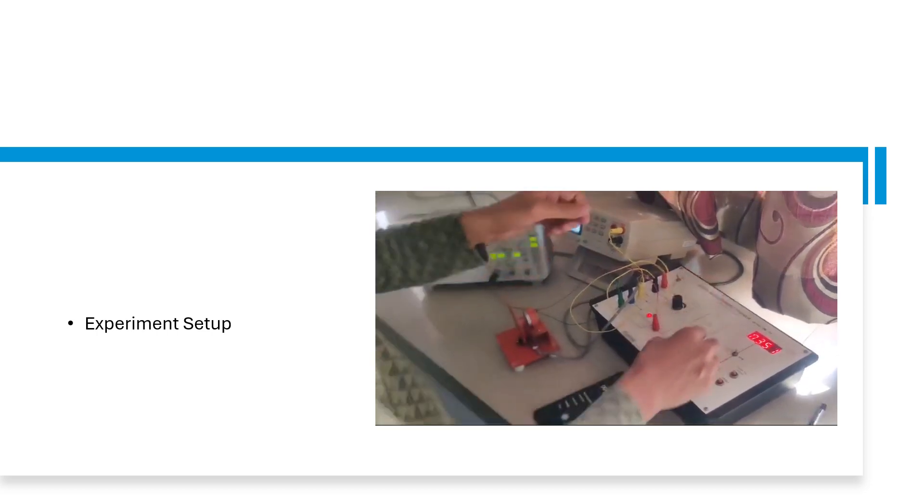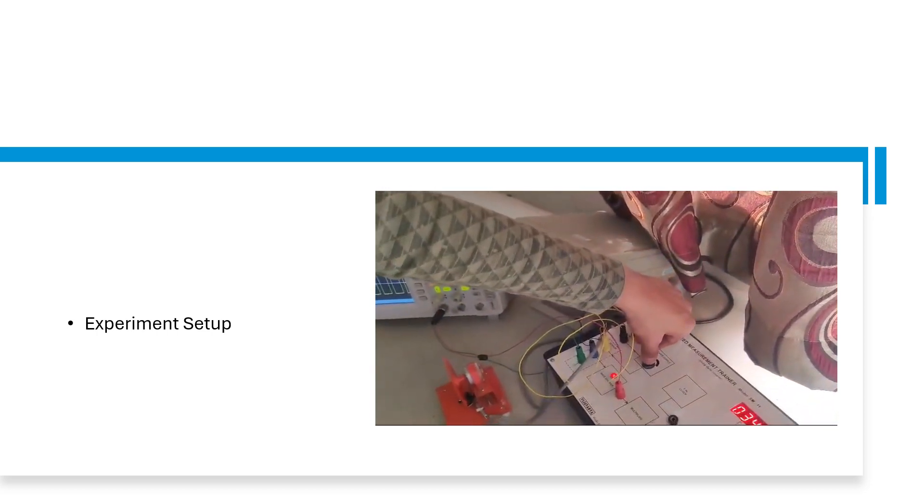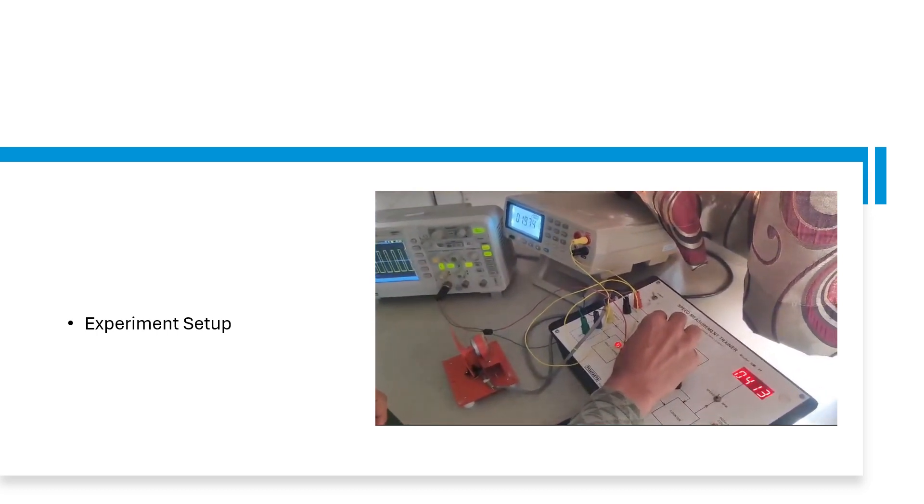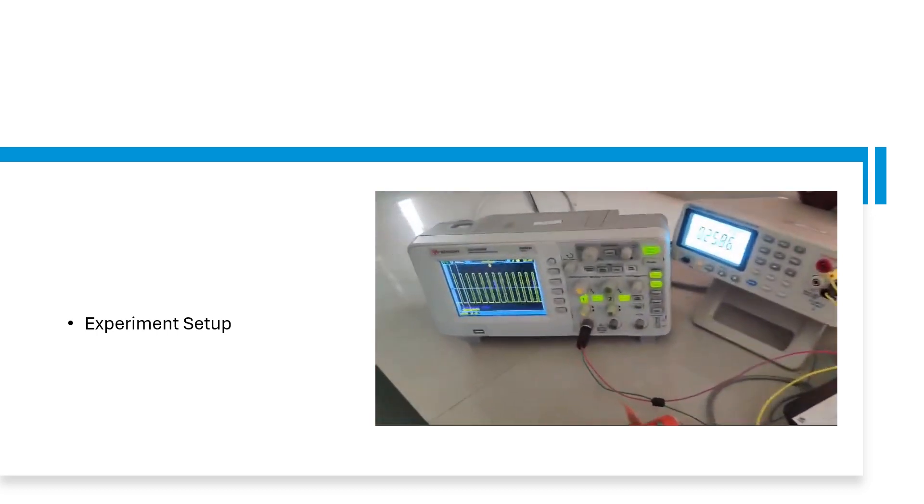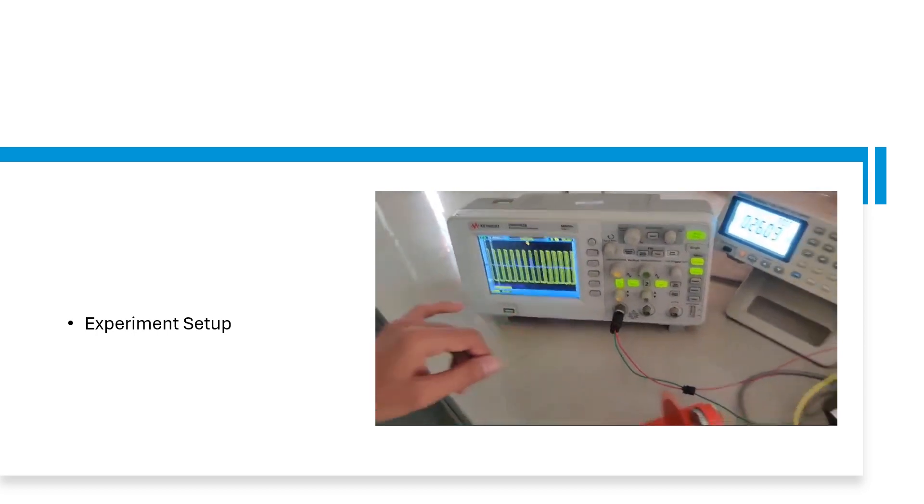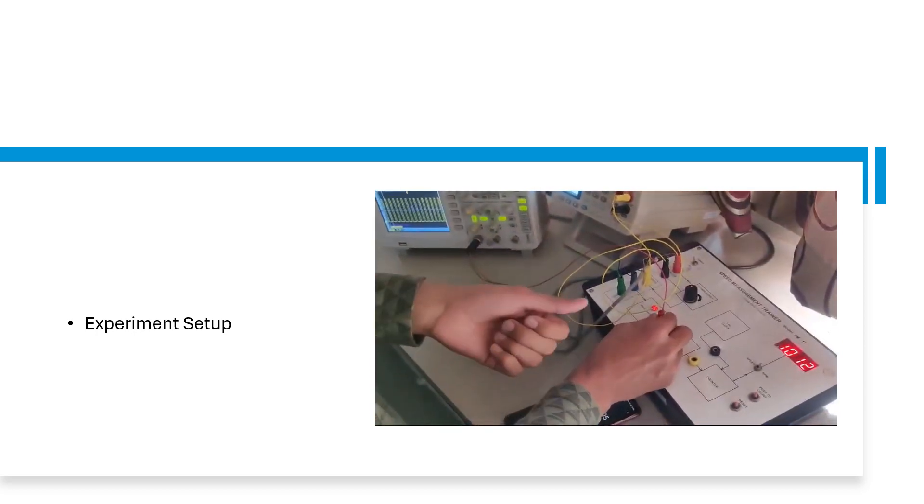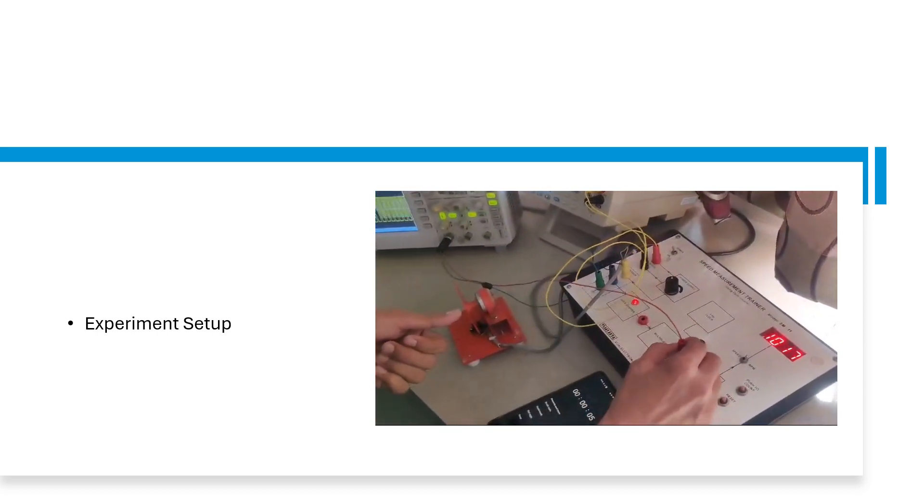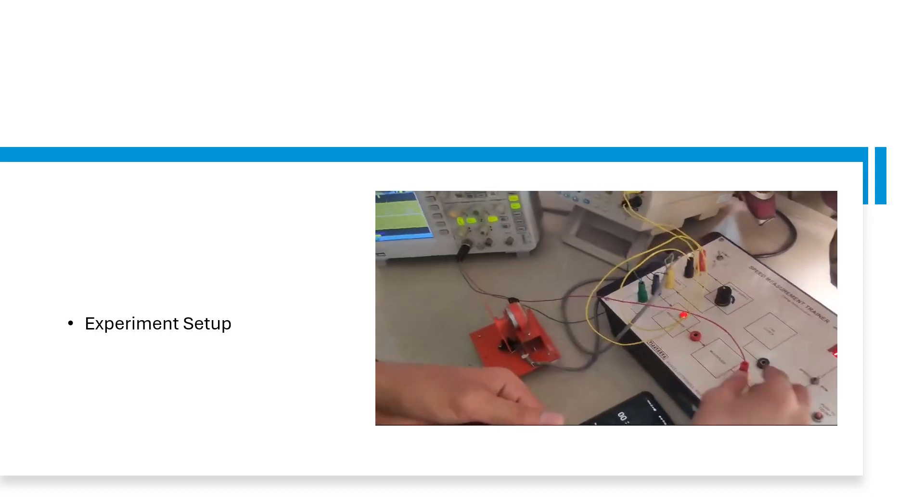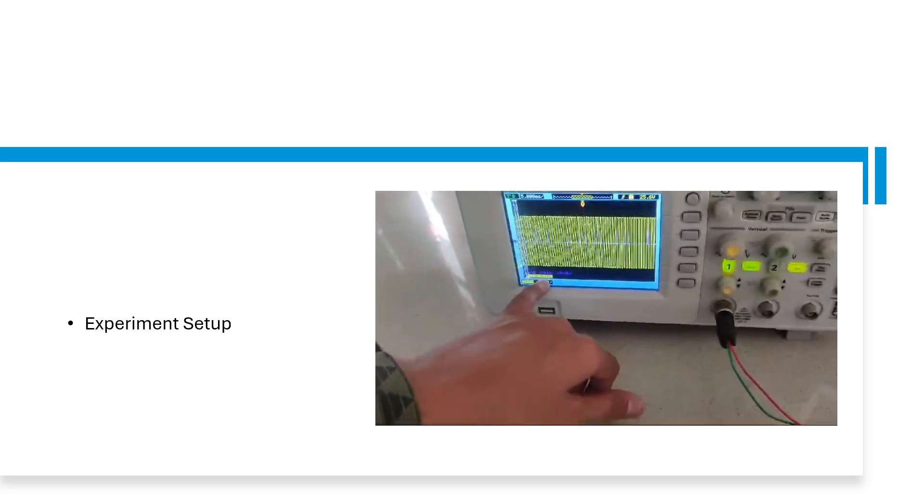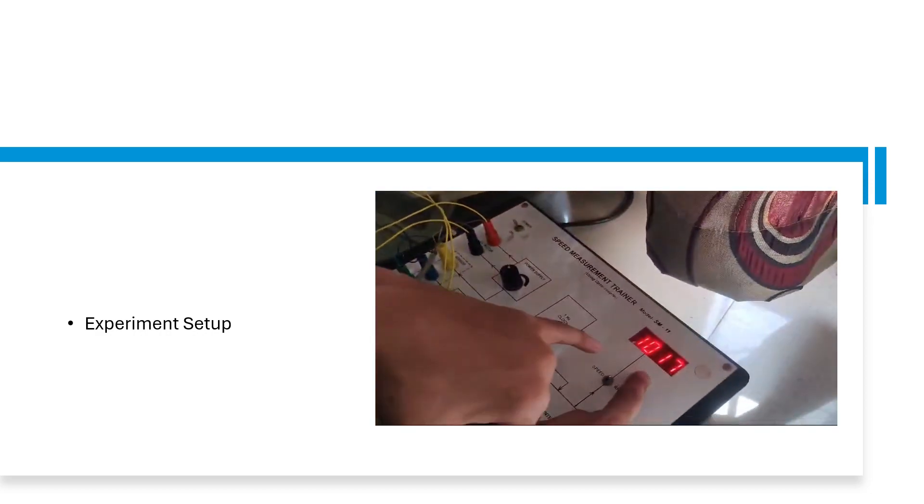Now we will take the reading. We will start some power and we will get some output here and some frequency. And now we will switch to the multiplier. And the reading shown in the oscilloscope is almost similar to the digital screen.